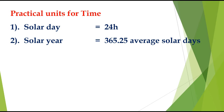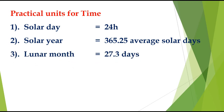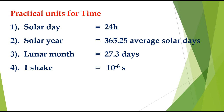One solar year is the time taken by the Earth to complete one revolution around the Sun in its orbit. Its value is 365.25 average solar days. One lunar month is the time taken by the Moon to complete one revolution around the Earth, equal to 27.3 days. One shake equals 10⁻⁸ seconds and is the smallest unit of time.